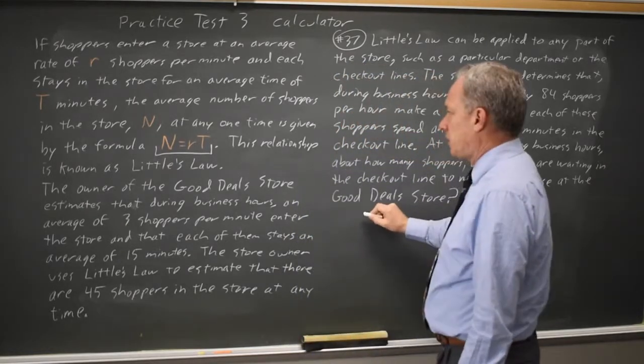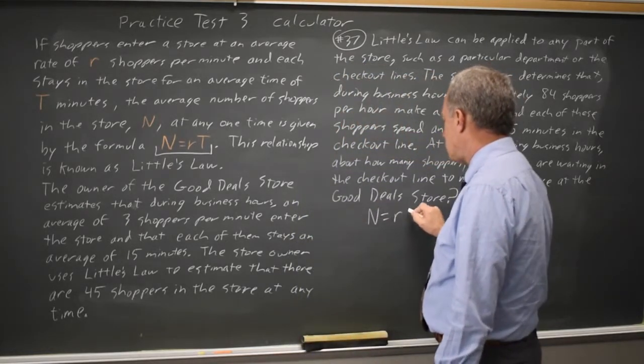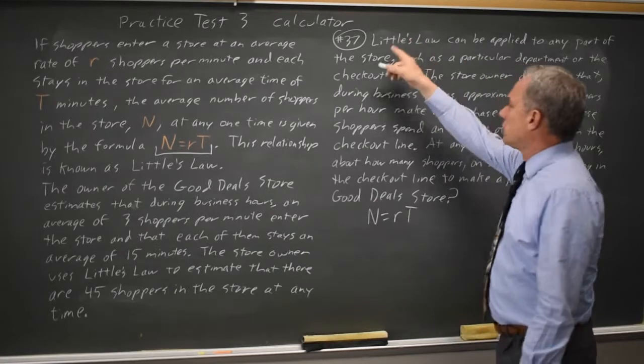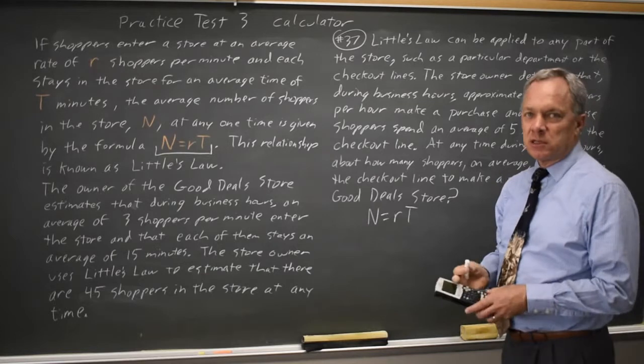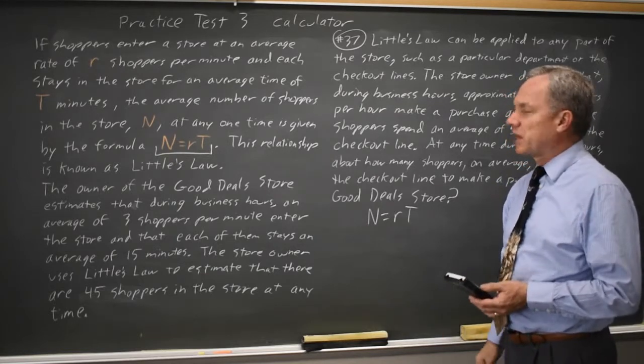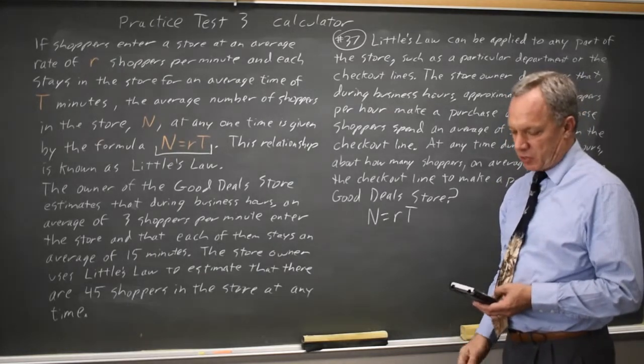So I'm going to use the equation n equals rt to solve this portion here where they say 84 shoppers per hour. This is the end of the test, question 37 out of 38.